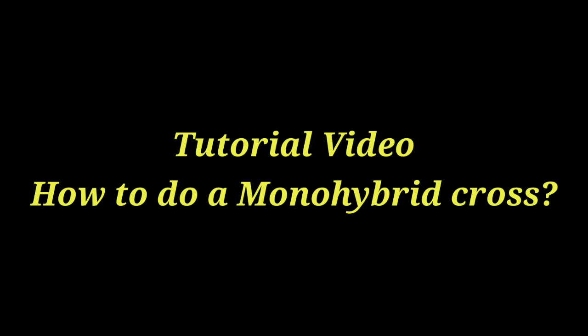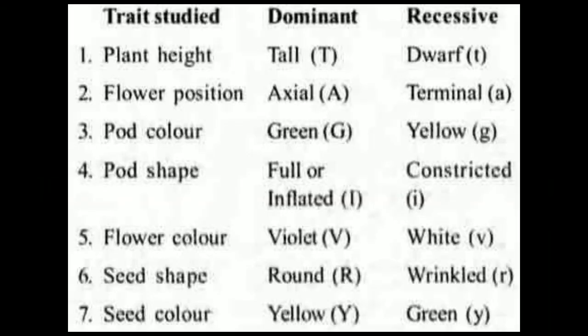In order to do a monohybrid cross, we first have to know about the contrasting characters and the alleles through which those characters are represented. This is the chart for the seven contrasting characters that Mendel had chosen during his experiment: plant height, flower position, pod color, pod shape, flower color, seed shape, and seed color.